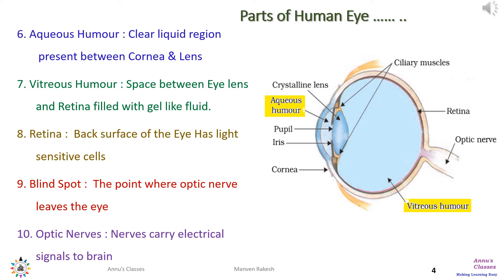Vitreous humor fills the space between the retina and the lens and maintains the shape of the eyeball. The retina is a thin layer of tissue at the back of the eye that receives the light and image focused by the lens. It translates this image into neural signals, which are sent to the brain for visual recognition. The blind spot is a point from where the optic nerves leave the eye, and optic nerves carry the neural signals to the brain for recognition.